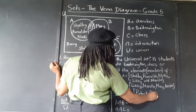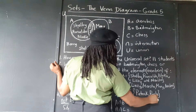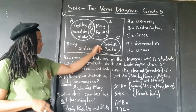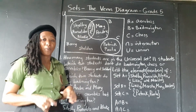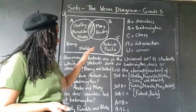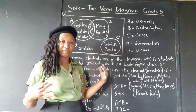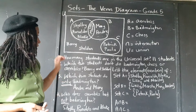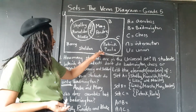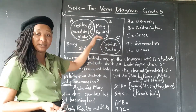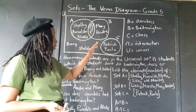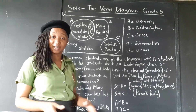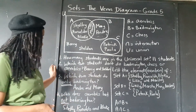You notice that set C is disjoint — it's disjoint with the other sets. It does not overlap the other two sets. When sets don't overlap, they just exist by themselves within the universal set; we say that they are disjointed. So nobody who does chess does anything else — they only do chess. Maybe chess is just too demanding; they just have to focus on chess only.